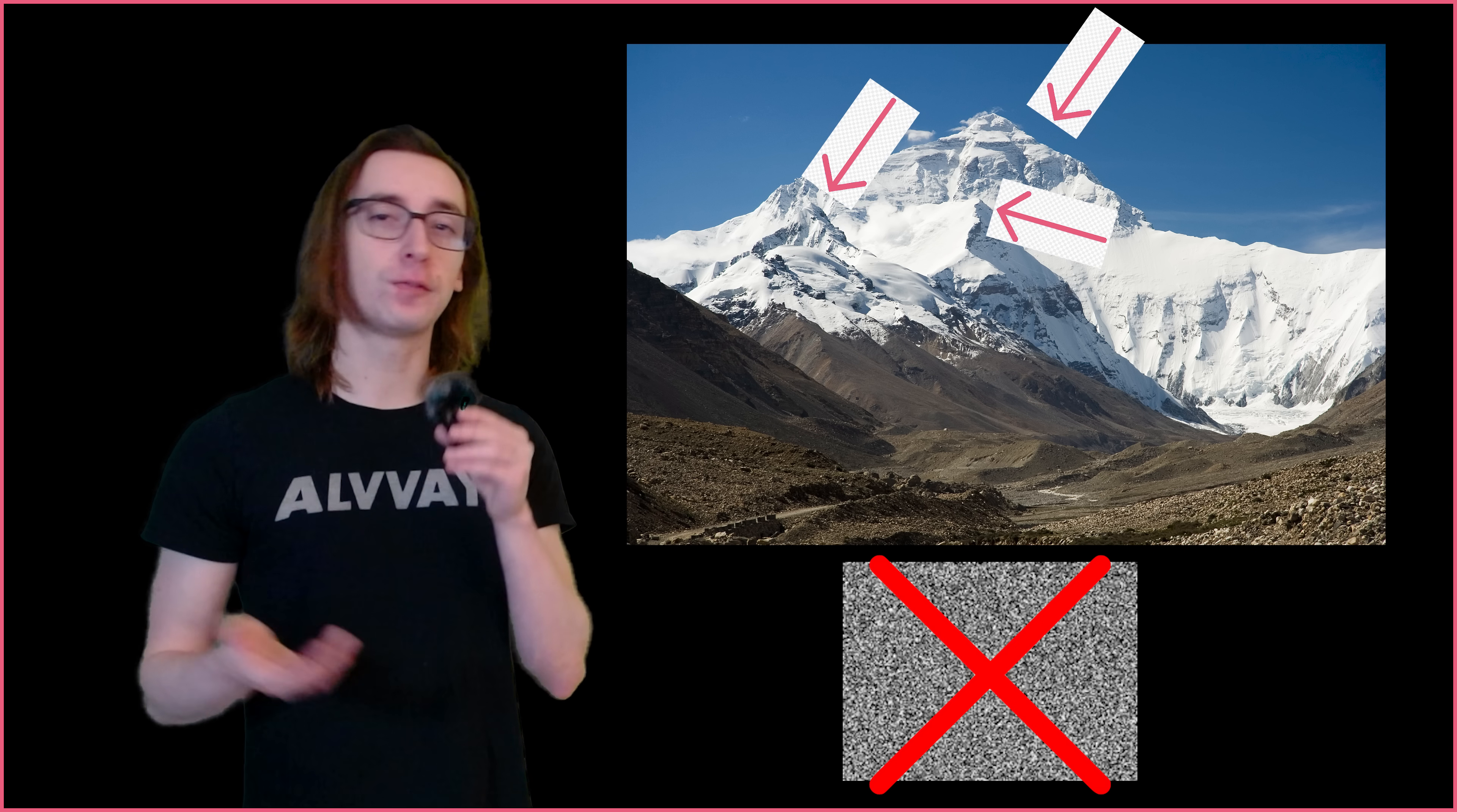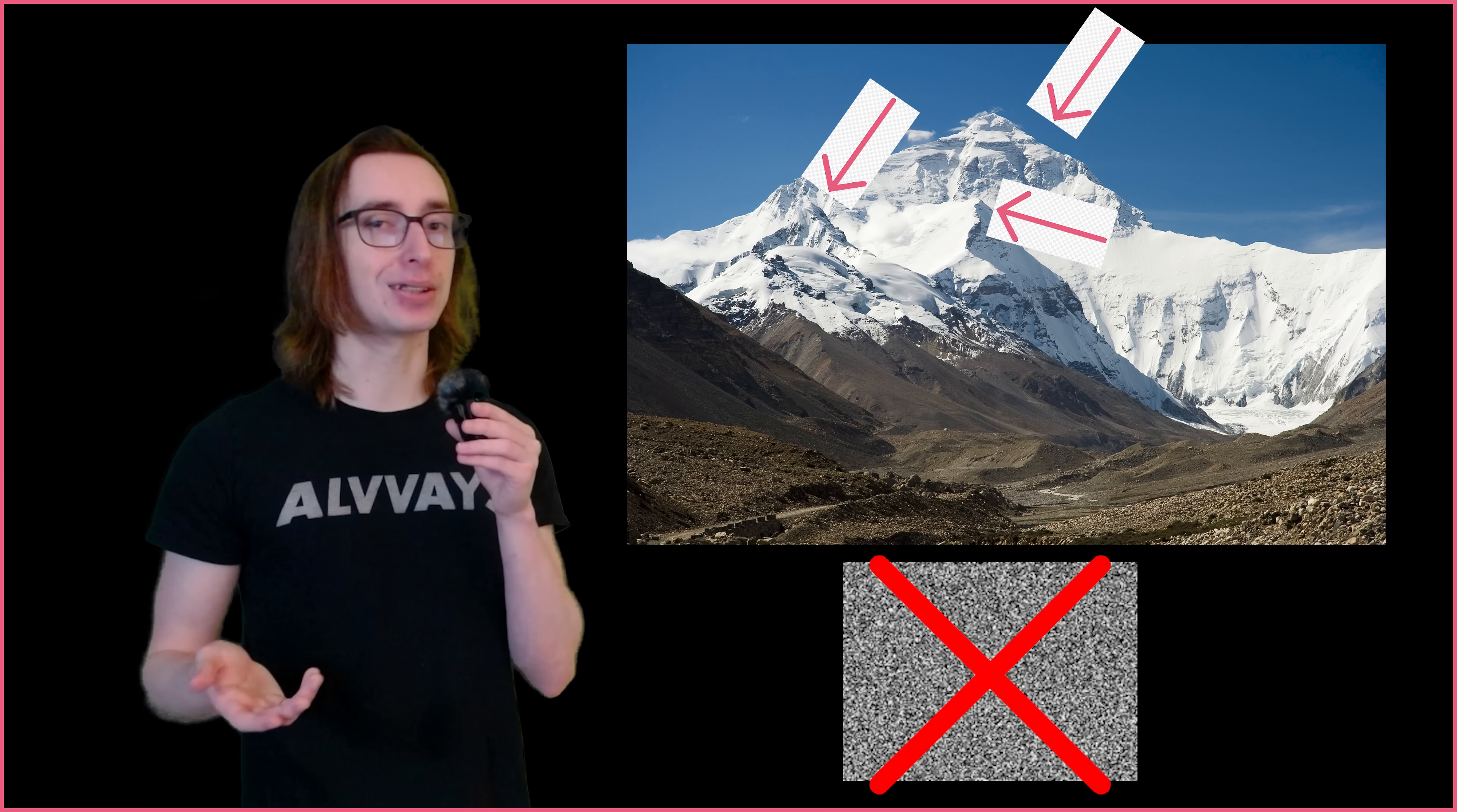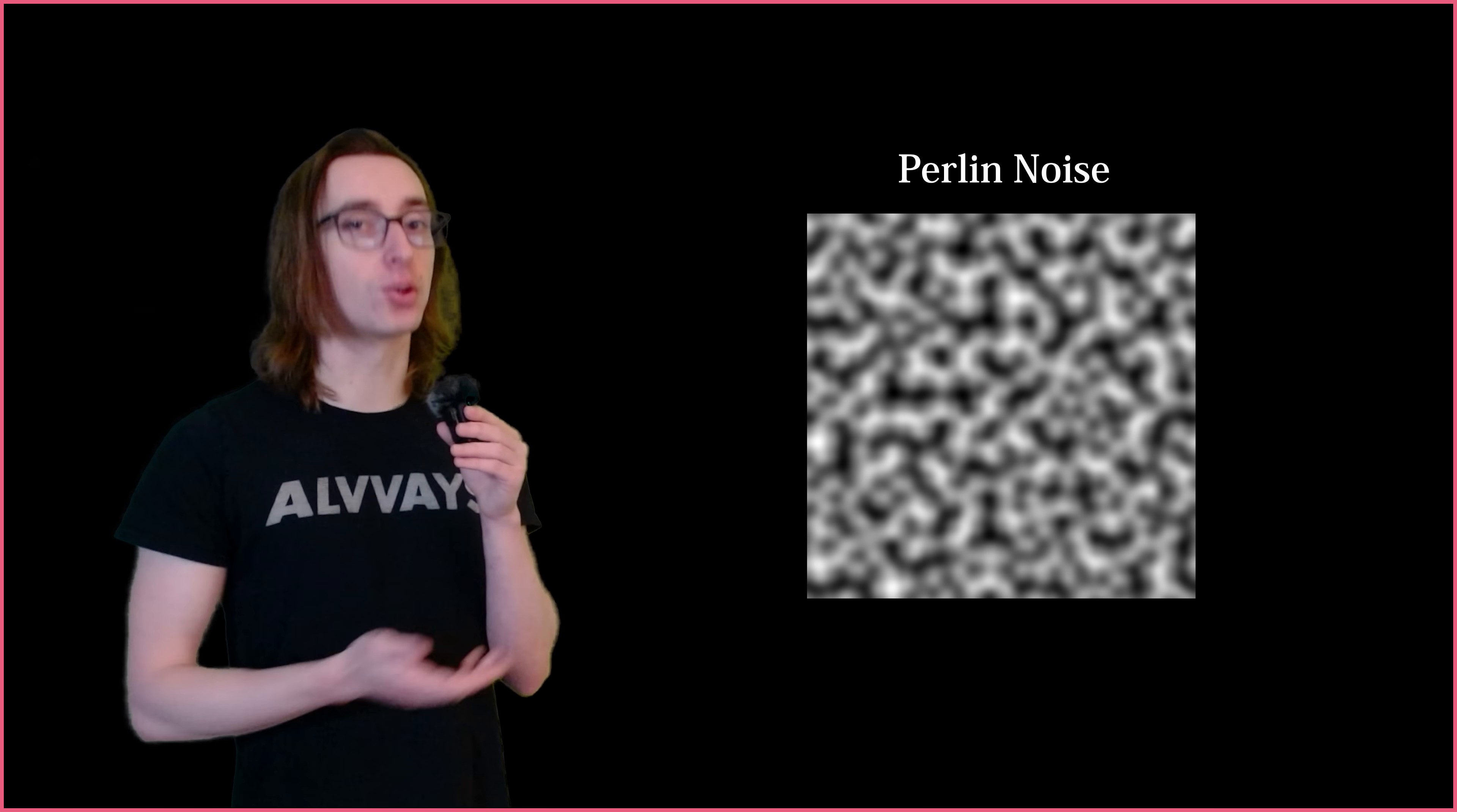Mountains in the real world do not look like white noise. The features are all relatively self-similar and spatially consistent. It follows a trend. This is a problem that Ken Perlin sought to solve 40 years ago when he invented the very famous Perlin noise.